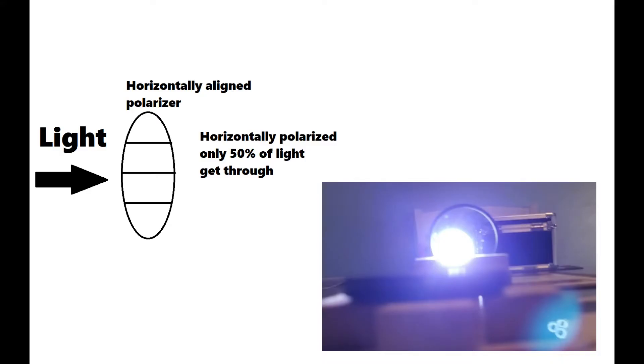To break this down on how this works: the first polarizer is aligned horizontally, so only 50% of the light gets through. If you line the second polarizer vertically, then no light will get through.